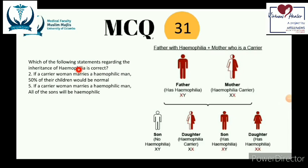Question 31 is about hemophilia inheritance. Hemophilia is an X-linked recessive pattern of inheritance — the genes are located on the X chromosome. In males, who have only one X chromosome, one altered copy is enough to express the condition. In females, both copies must be mutated, so males are disproportionately at higher risk.